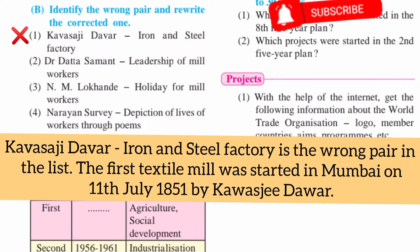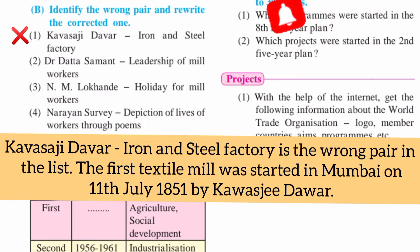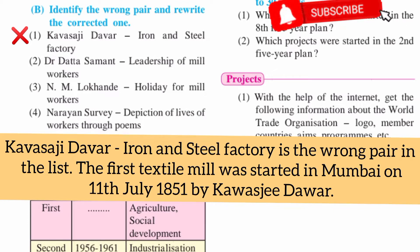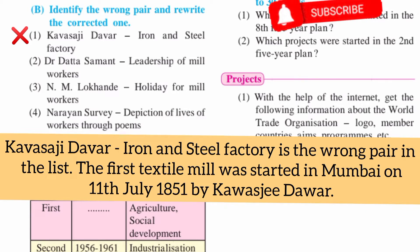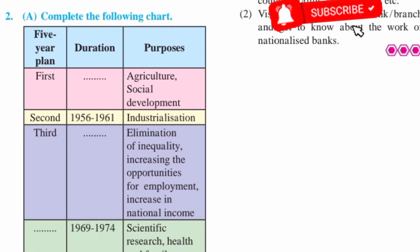Next question number 1b: identify the wrong pair and rewrite the corrected one. The first one is the wrong one — that is, 'Kavasjee Davar: Iron and Steel Factory.' The correction is: the first textile mill was started in Mumbai on 11th July 1851 by Kavasjee Davar. The rest of the pairs are correct.